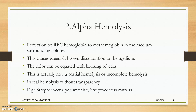Moving to alpha hemolysis — we cannot use the term partial hemolysis here. In alpha hemolysis, reduction of RBC hemoglobin to methemoglobin occurs. RBC hemoglobin is converted to methemoglobin in the presence of the alpha hemolytic toxin of the bacteria. This causes a greenish-brown discoloration of the medium. The color can be equated with the bruising of the cells, produced due to the methemoglobin formed. Transparency is not present in alpha hemolysis. Although we often use the term partial hemolysis, this is technically an irony.